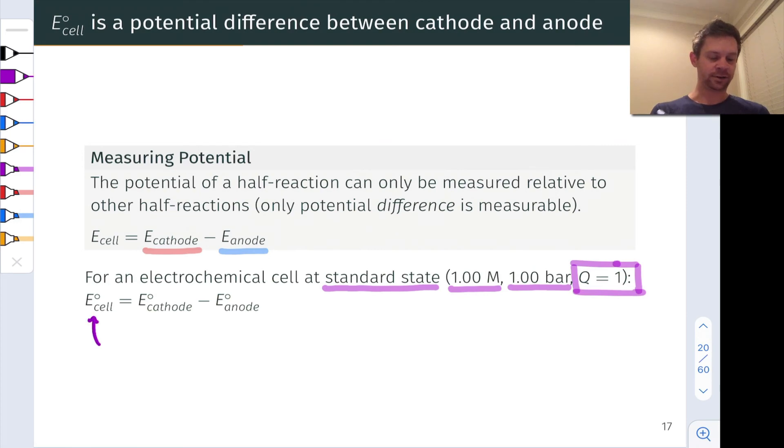The so-called standard cell potential, which is this quantity here on the left, and it's that little circle that really tells us this is a standard situation, is equal to the standard potential of the cathode minus the standard potential of the anode. And those standard potentials are measured in a very particular way that we'll talk about in the very near future. The key thing to keep in mind for any galvanic cell is that the standard cell potential involves both half cells at standard states such that the overall reaction quotient for the spontaneous redox reaction is equal to one.